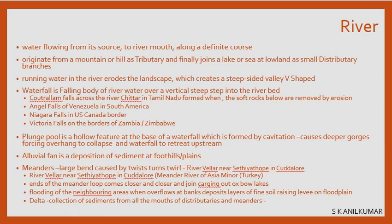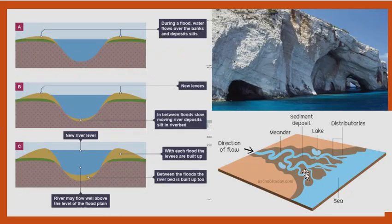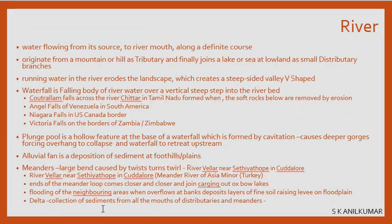A delta is a collection of fine silt and sediment deposited by distributaries near the mouth of a river. The delta is fertile and very rich in nutrients and minerals, making it excellent for cultivation. The Kaveri delta has been the home of Dravidian civilization for a long time; the Chola period flourished because of the Kaveri delta, which is known as the rice bowl of South India.